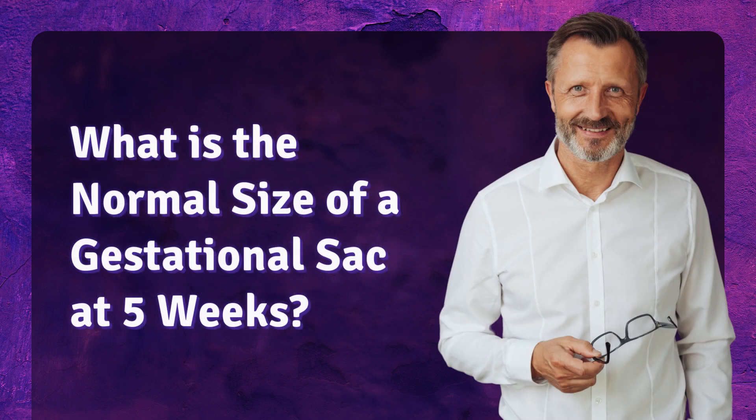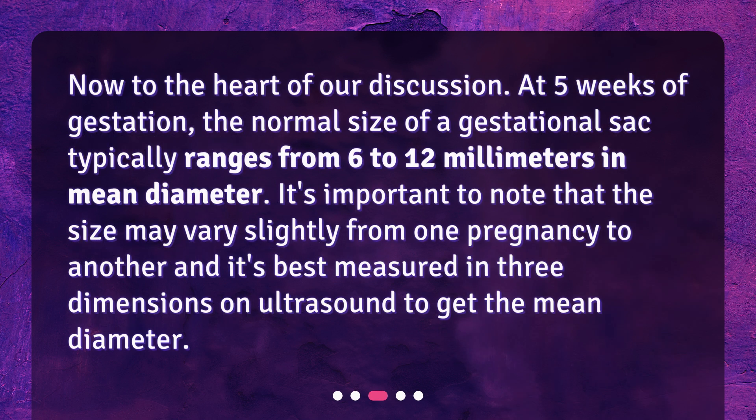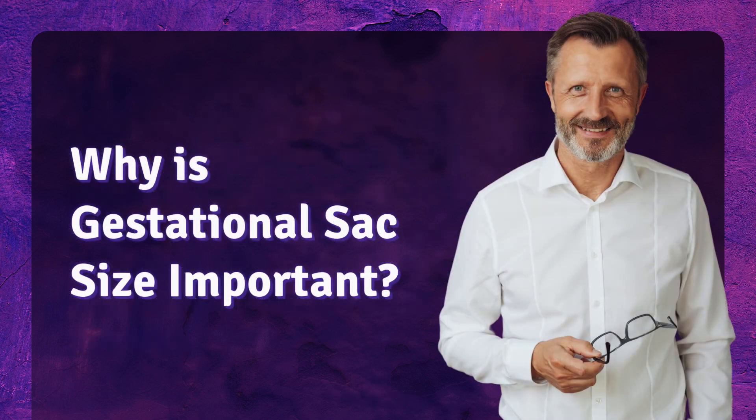What is the normal size of a gestational sac at five weeks? At five weeks of gestation, the normal size of a gestational sac typically ranges from 6 to 12 millimeters in mean diameter. It's important to note that the size may vary slightly from one pregnancy to another, and it's best measured in three dimensions on ultrasound to get the mean diameter.